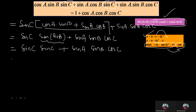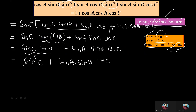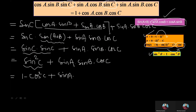Following the simplification, sinC·sinC can be written as sin²C, plus sinA·sinB·cosC. Now, sin²C can be compared with the formula sin²θ equals 1 minus cos²θ. So sin²C is replaced by 1 minus cos²C, and the remaining part is sinA·sinB·cosC.